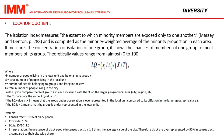The Location Quotient / Isolation Index measures the extent to which minority members are exposed only to one another, and is computed as the minority-weighted average of the minority proportion in each area. It measures the concentration or isolation of one group and shows the chances of members of one group to meet members of each group. Theoretically, values range from almost 0 to 100.